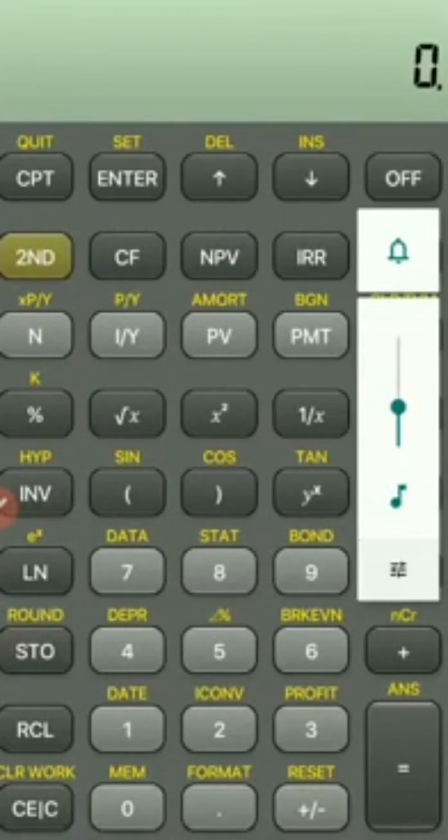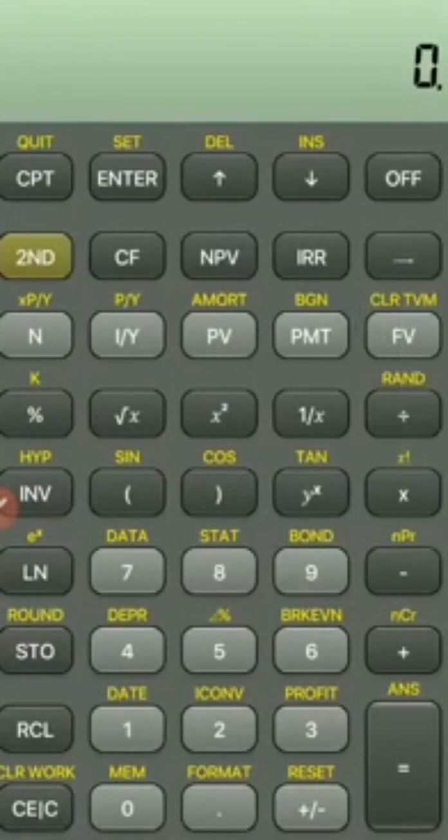Suppose we want to find the mean and standard deviation of six numbers: 10, 20, 30, 40, 50, and 60. I'll show you how to do this on a Texas BA2 Plus calculator, which can be used in CFA and FRM programs.